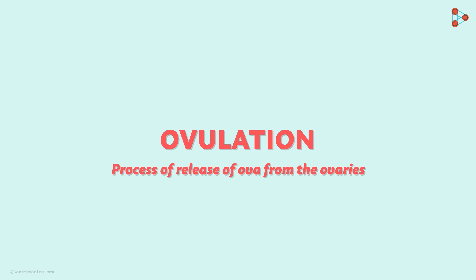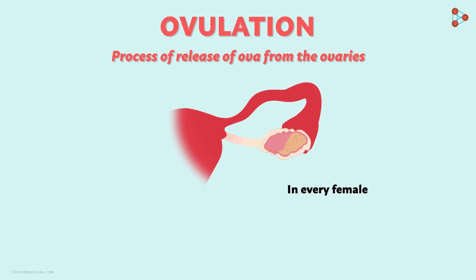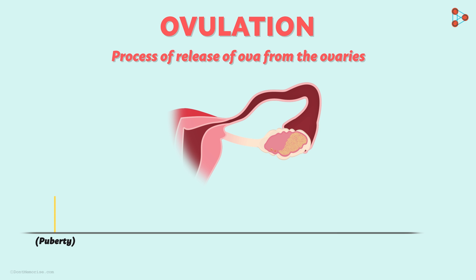Reproduction requires an egg cell as the female gamete, so reproduction is possible only when egg cells are released. In every individual female, the number of egg follicles in the ovaries is fixed — the ovaries have a fixed number of immature egg cells stored from the beginning. Only on the onset of puberty are egg cells released one after the other. The capacity to reproduce begins with the first egg cell released and stops when the egg cells are exhausted.